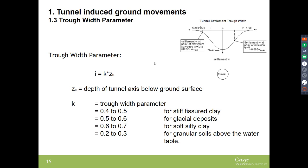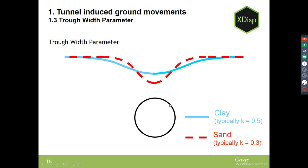The trough width parameter K is based on soil type. For clay, K is typically 0.4 to 0.5, dropping to around 0.2 to 0.3 for granular soils above the water table. A low K for sand gives a higher settlement directly above the tunnel but drops off faster with distance, whereas clay gives a slightly wider trough — a lower maximum directly above the tunnel but higher settlements further away.